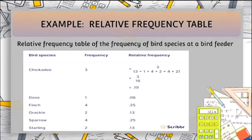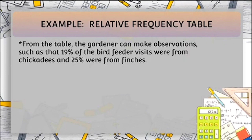For chickadee, 3 divided by 16 equals 0.19. For dab, 1 divided by 16 equals 0.06. For finch, 4 divided by 16 equals 0.25. For grackle, 2 divided by 16 equals 0.13. For sparrow, 4 divided by 16 equals 0.25. For starling, 2 divided by 16 equals 0.13. From this table, the gardener can make observations such as that 19% of the bird feeder visits were from chickadees and 25% were from finches.